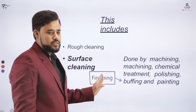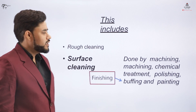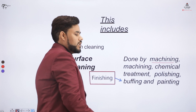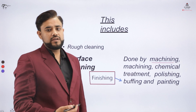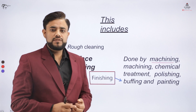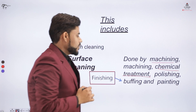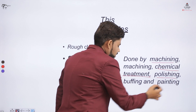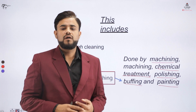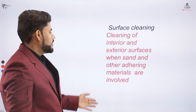Then we have the finishing process, which is the final step of fettling. In the finishing process, we make use of machining — such as a lathe machine, shaper machine, or planer machine — to remove debris from the surface. We can also opt for chemical treatments, polishing processes, buffing, and ultimately the painting process of the casted items.